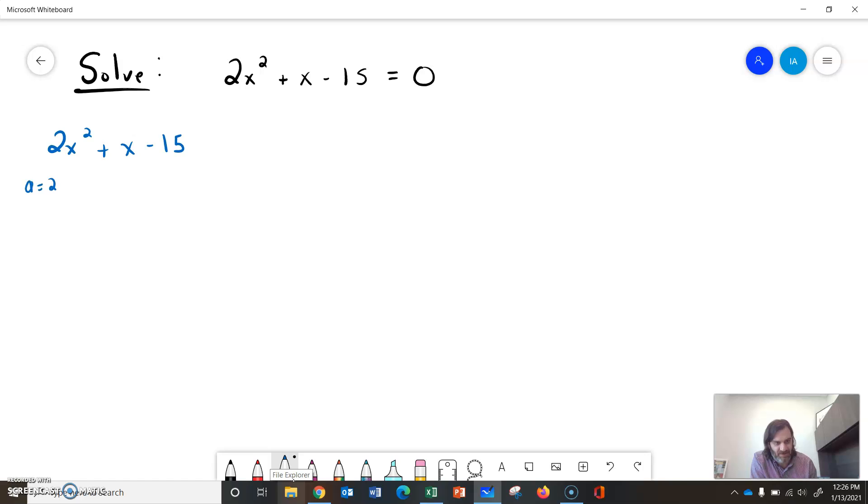a is 2, b is 1, c is negative 15. So we see the idea that factoring is important to us. We need two things multiplied together to give us a times c, which is negative 30, and they need to add up to be b, which is 1. In this case, I believe those two things could be 6 and negative 5.